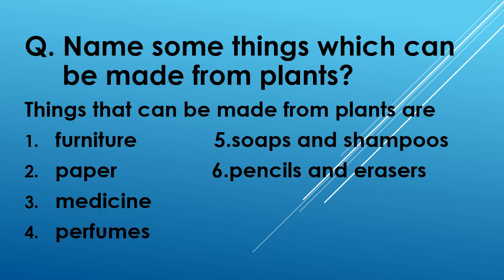Name some things which can be made from plants. Things that can be made from plants are furniture, paper, medicine, perfumes, soaps and shampoos, pencils and razors.